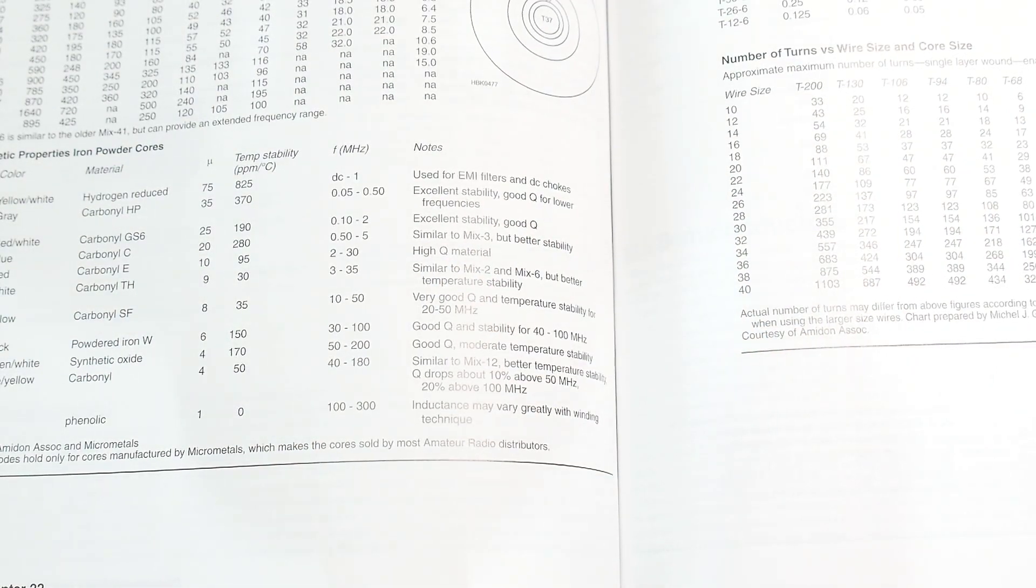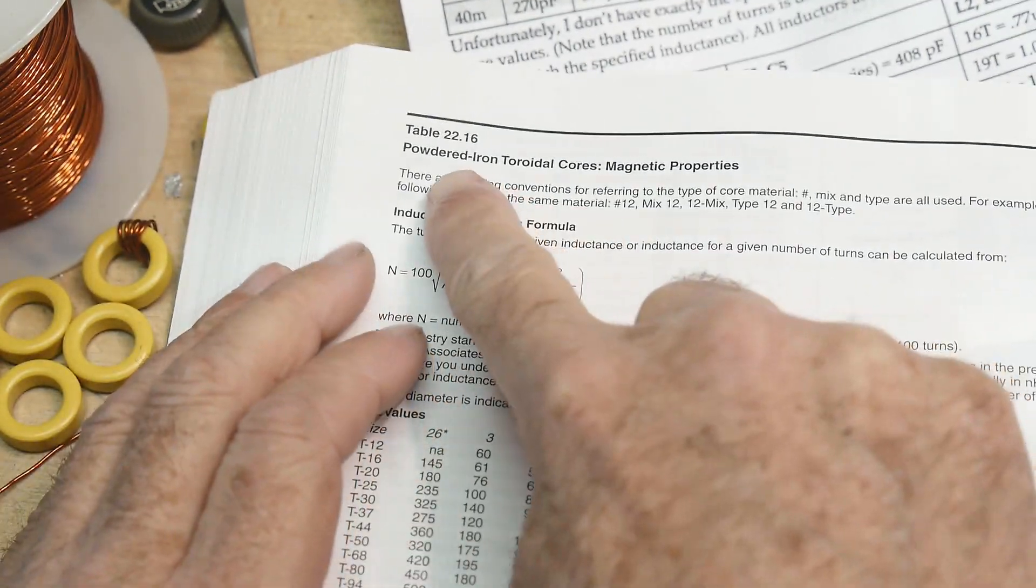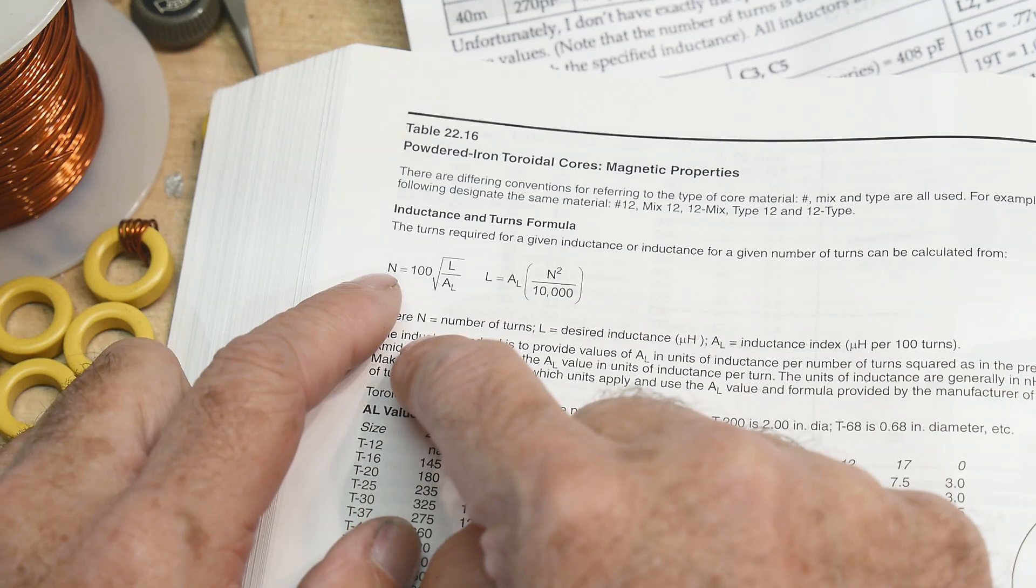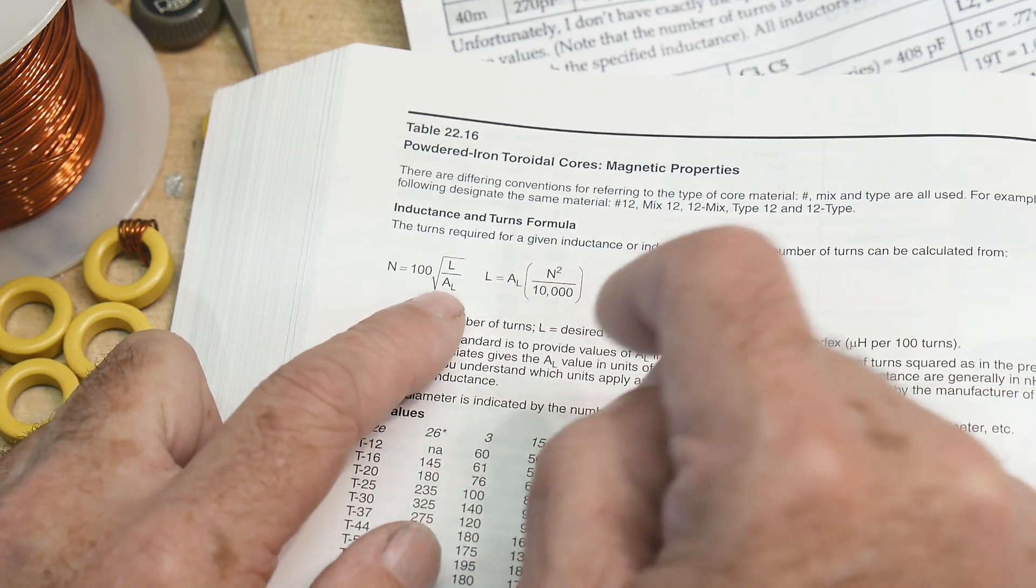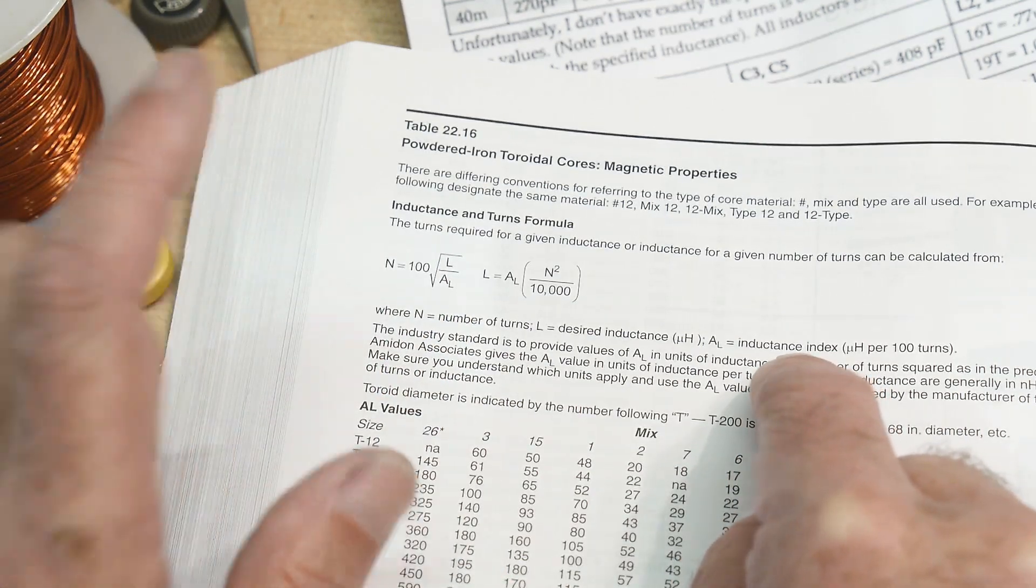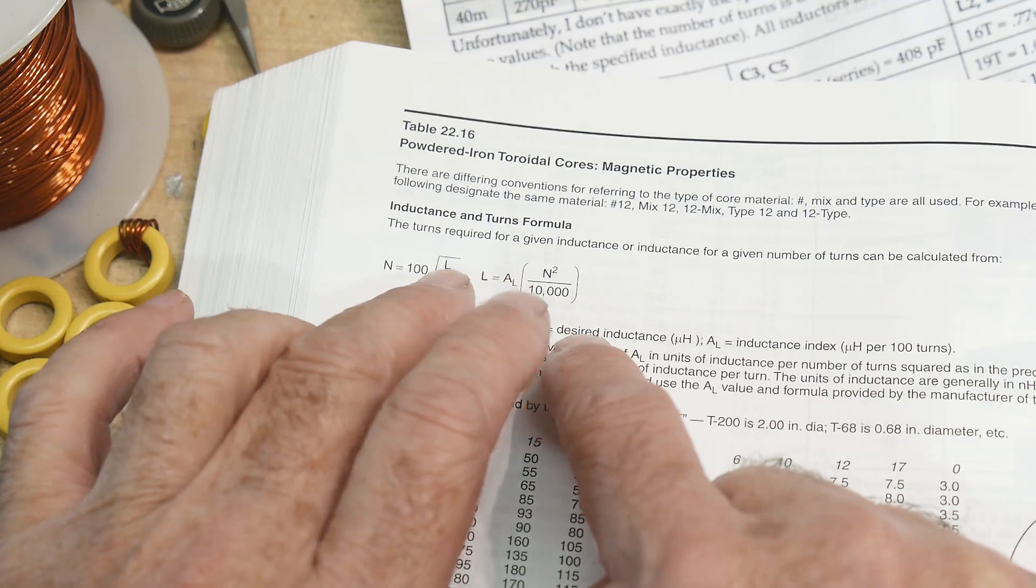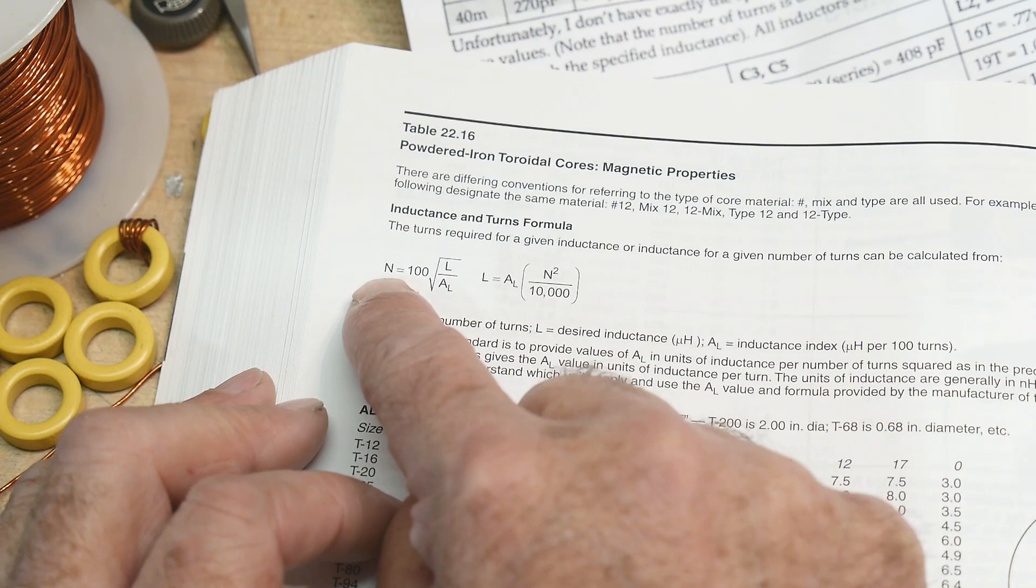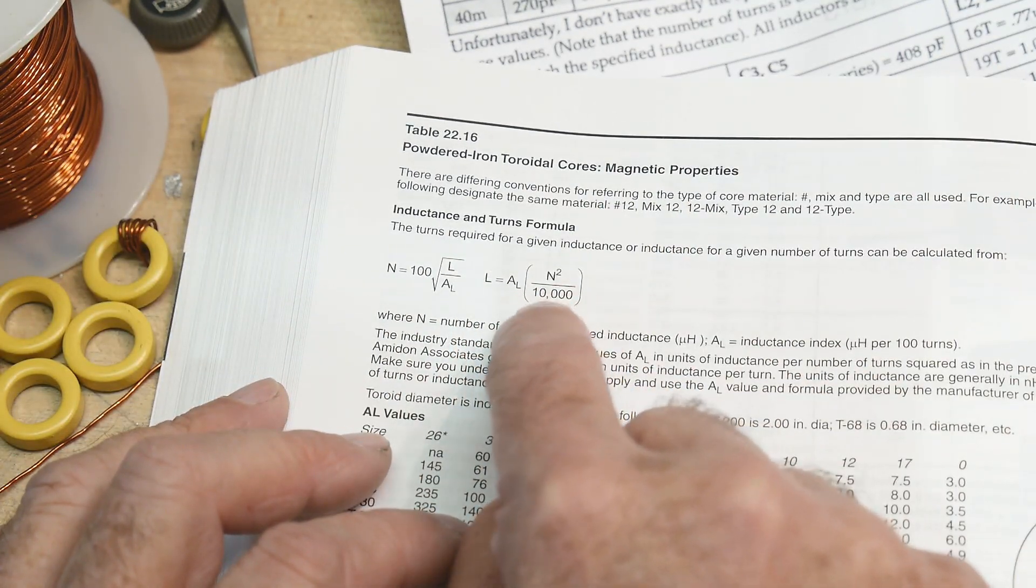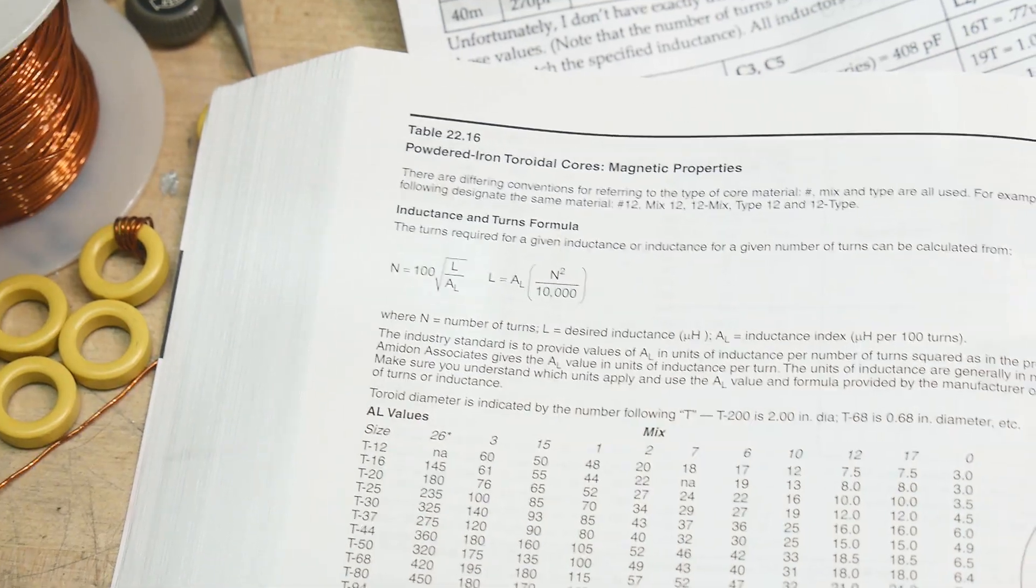Powdered iron toroidal cores inductance and turns formula: the number of turns required is 100 times the square root of L over A, where L is the inductance you want and A is the inductance index. L equals A times number of turns squared. They give some sizes and stuff here.